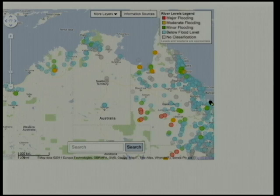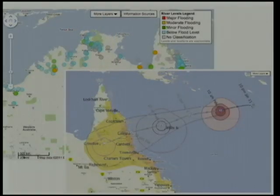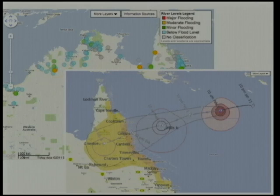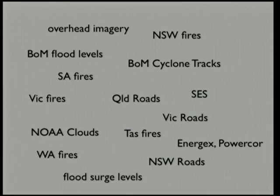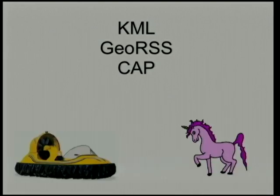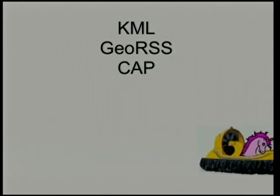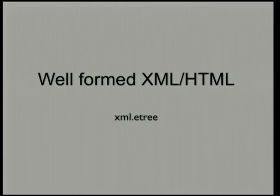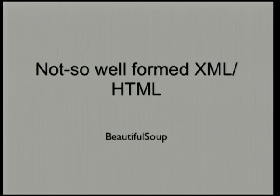We also pulled in data from the Bureau of Meteorology. This is all the data from the first three months of this year that we managed to pull into that map, all of it from different websites. In a perfect world, spatial information — generally disaster information — comes in a nice open standard format like KML, GeoRSS, or Common Alerting Protocol. In this world, I have a unicorn and a hovercraft. In a slightly less perfect world, which we mostly have, we have well-formed XML and HTML — we can use xml.etree. And then we get into the more fun stuff: not-so-well-formed XML and HTML.